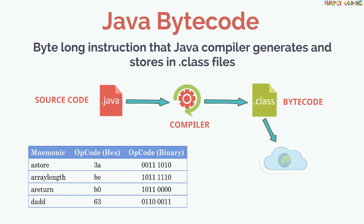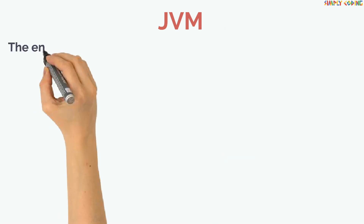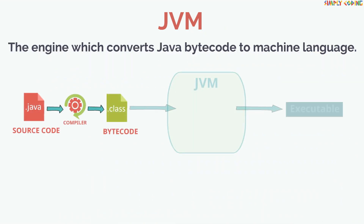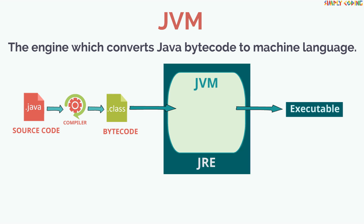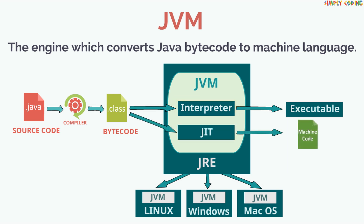This bytecode is not specific to any platform and can be inserted in HTML and distributed over the internet. JVM is an engine which converts Java bytecode to machine language. It is part of JRE, or Java Runtime Environment, in which the Java program executes. It is an interpreter. The JVM or JRE must be implemented on a particular platform before compiled programs can run on that platform. A JVM can either interpret the bytecode one instruction at a time, or the bytecode can be compiled further for the real machine using what is called a just-in-time compiler.